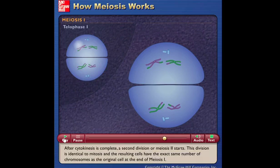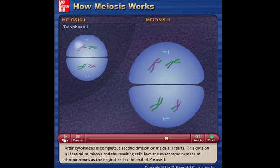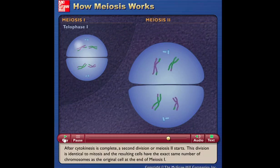After cytokinesis is complete, a second division, or meiosis II, starts. This division is identical to mitosis, and the resulting cells have the exact same number of chromosomes as the original cell at the end of meiosis I.